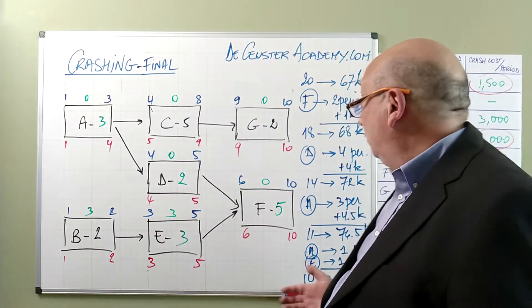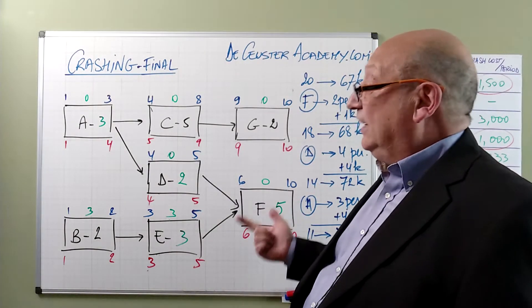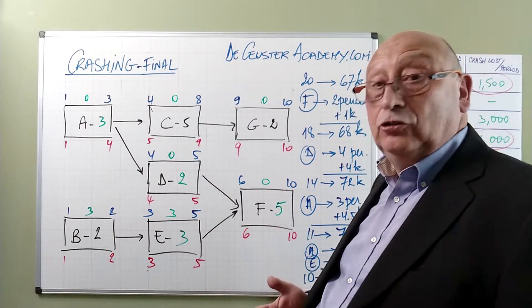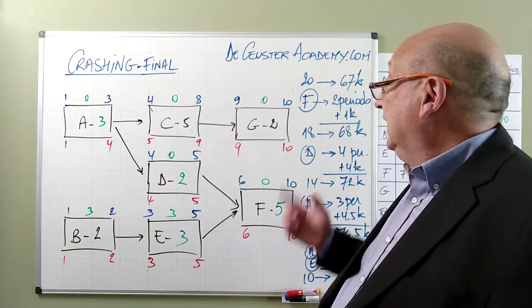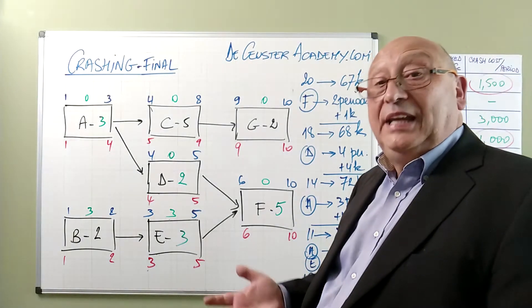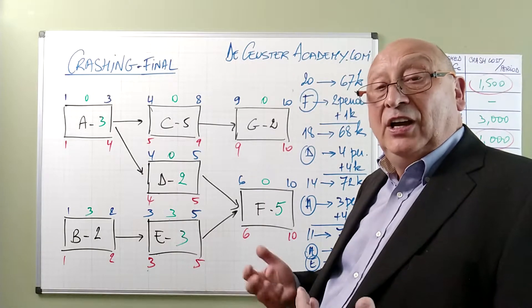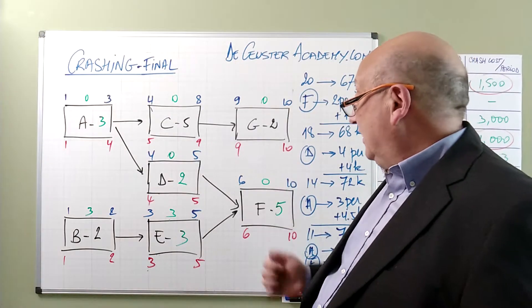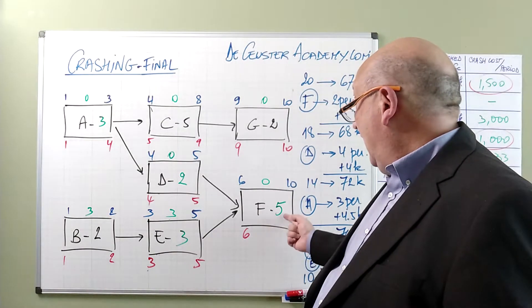The final duration of the project is 10 periods. We crashed activity A with three periods, so to four periods basically. C and G we didn't crash at this moment, but we can still crash them, but they will not have an effect on the duration of the project. D we crashed to two periods, F to five periods, and E to three periods.